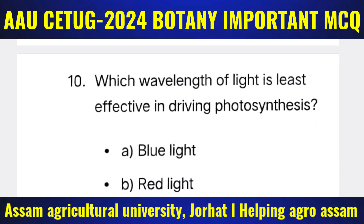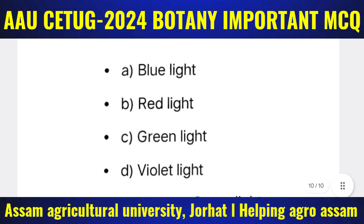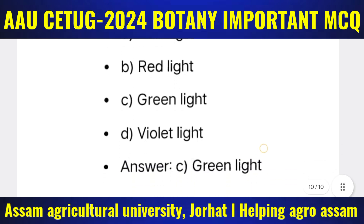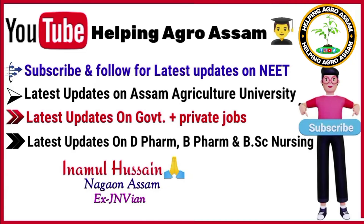Last question, Question 10: Which wavelength of light is least effective in driving photosynthesis? The options are: (a) Blue light, (b) Red light, (c) Green light, (d) Violet light. The correct answer is option C — Green light.